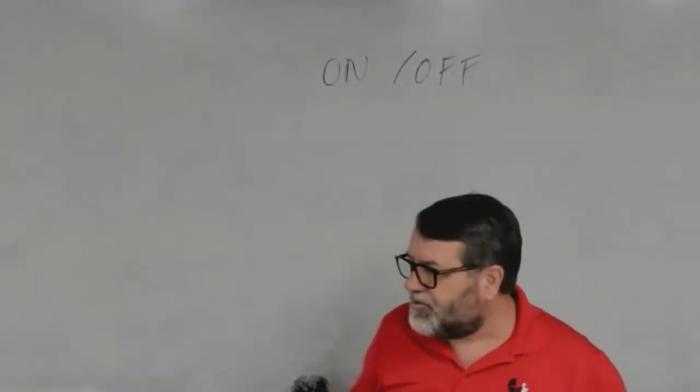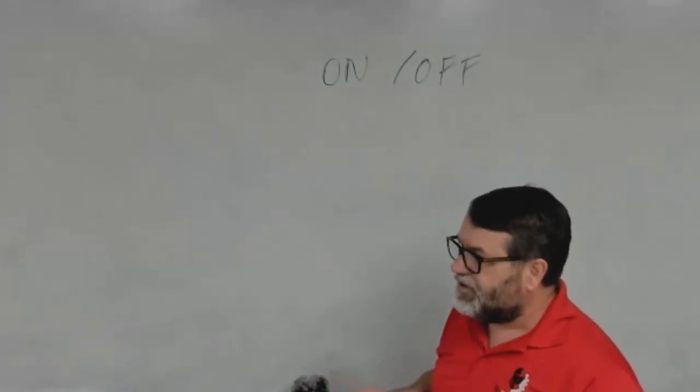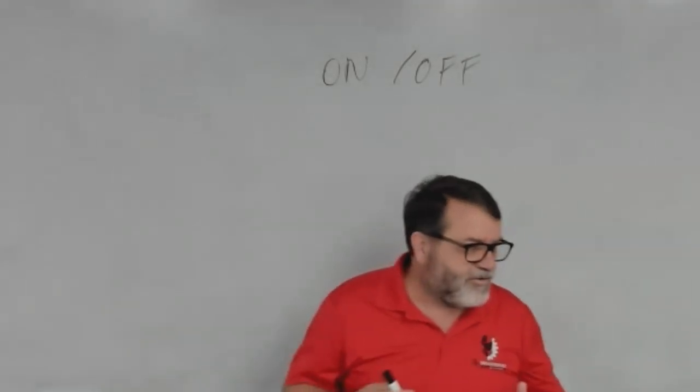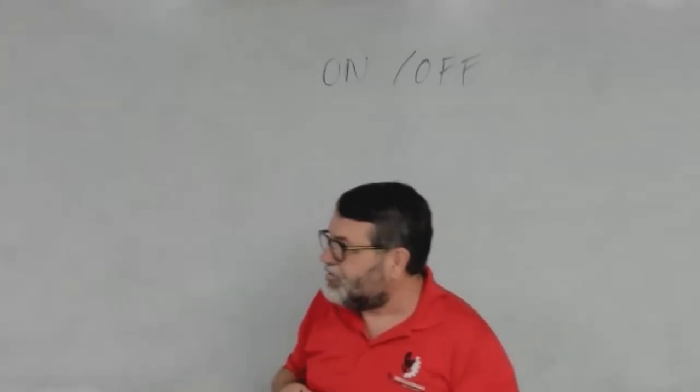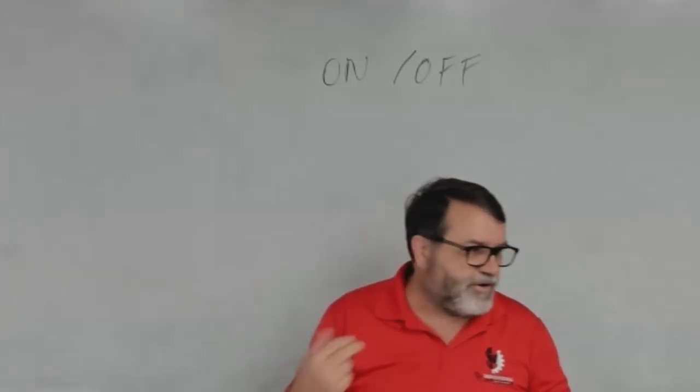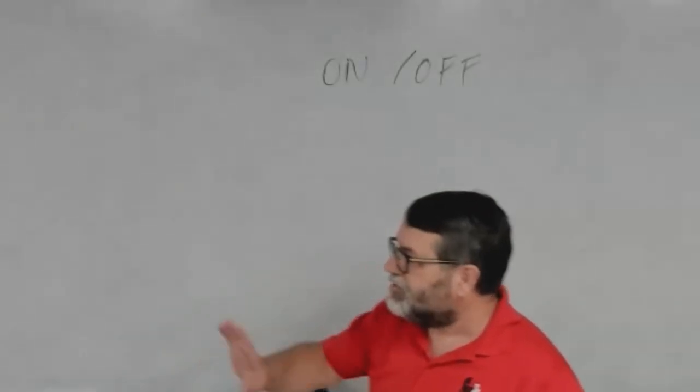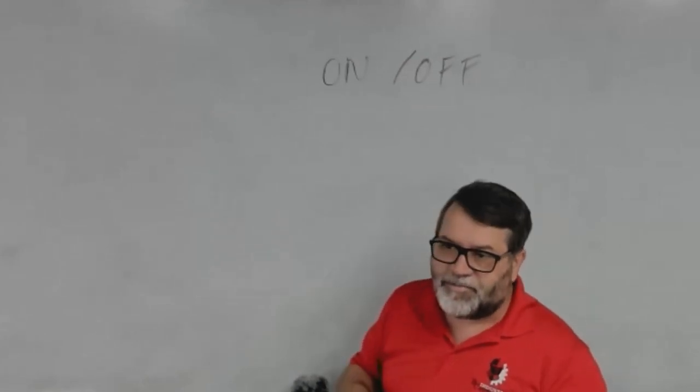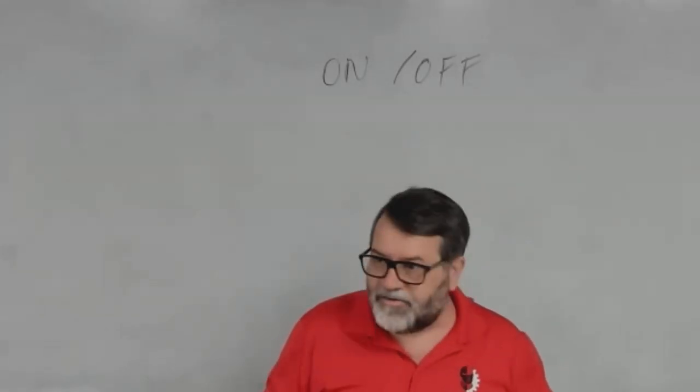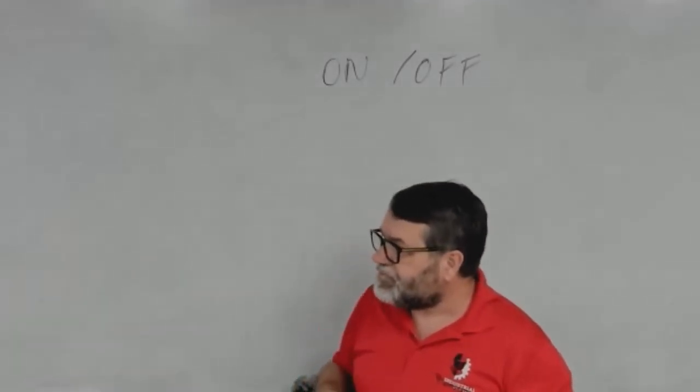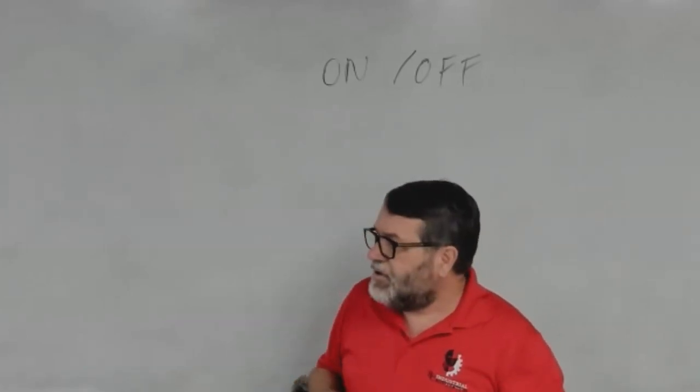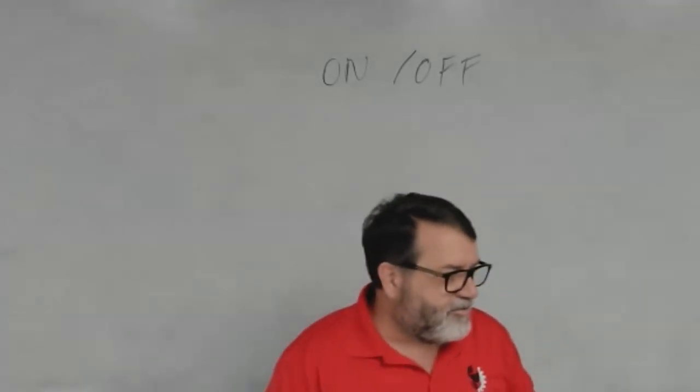We talked about table saws and dust collectors last week. If any of you have a table saw, or someone in your family has one at home, it probably has an on-off switch. You flip it up or pull it out to turn it on, and then you either flip it down or press it down to turn it off. That's the way most residential machinery are set up. They just have an on-off switch. It works fine.